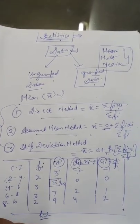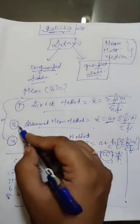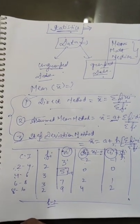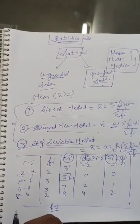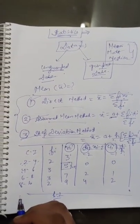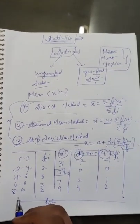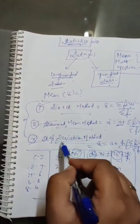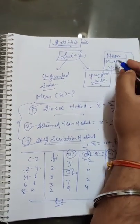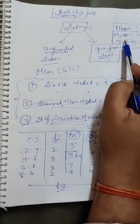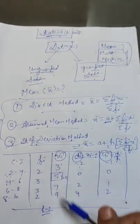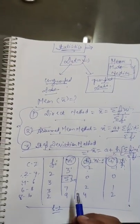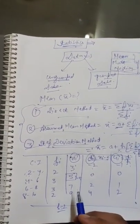Hence we can find the mean of the grouped data by the direct method, assumed mean method, or step deviation method. This is the introductory part of the statistics chapter for class 10th. In the next video we will start with NCERT questions to find the mean using all three methods. The other two central tendencies — mode and median — will also be covered. Keep revising this introduction and make sure these formulas are learned. Thank you.